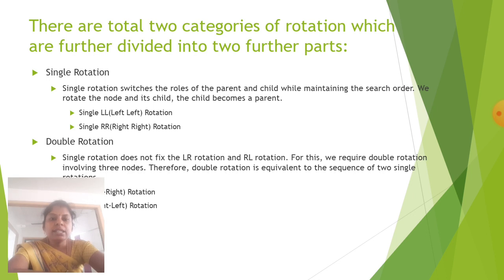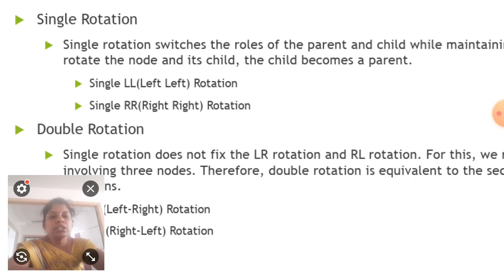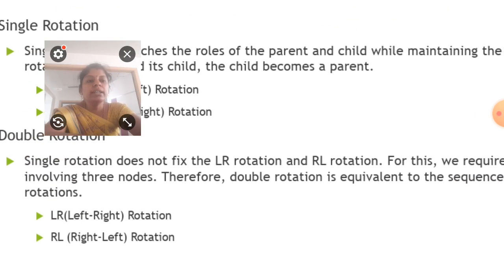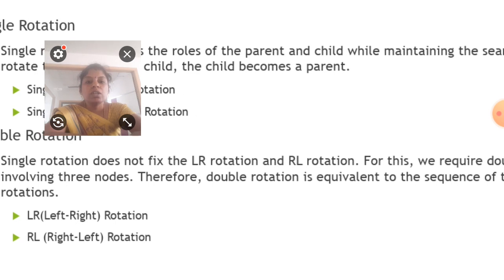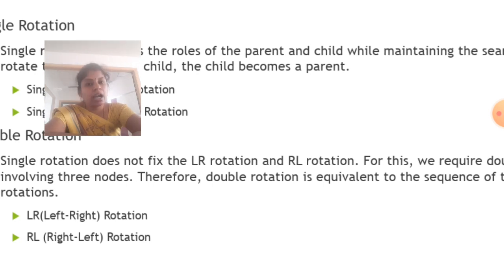The next is the double rotation. Single rotation node does not fix the LR rotation and RL rotation. For this we require double rotation involving three nodes. Therefore double rotation is equivalent to the sequence of the rotations: LR left-right rotation, RL right-left rotation.